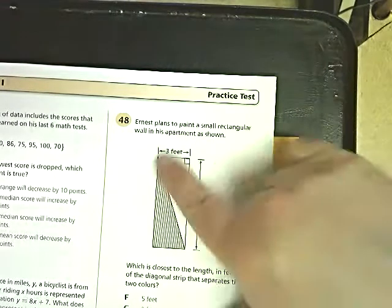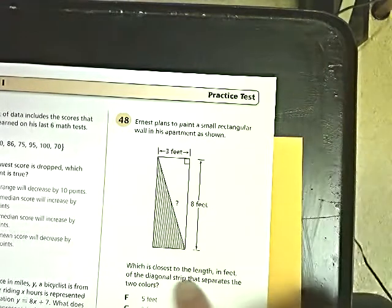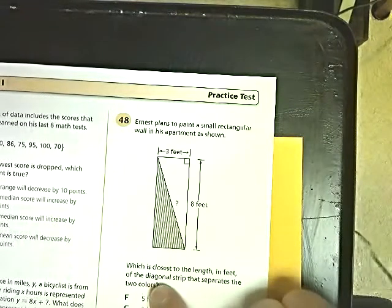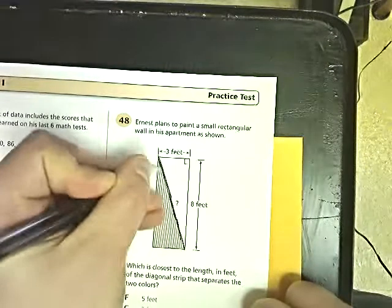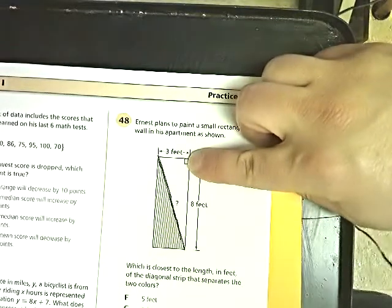Ernest plans to paint a small rectangular wall. What is the closest in length of feet of the diagonal strip that separates the two colors? So, they want to know this. There's your right angle right there. It's a triangle.